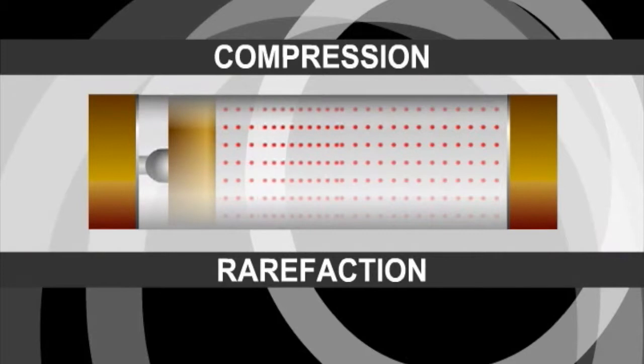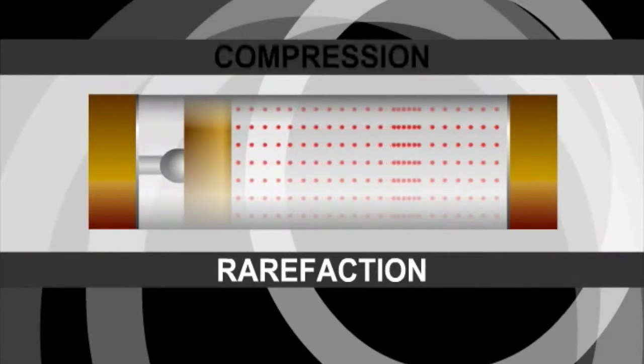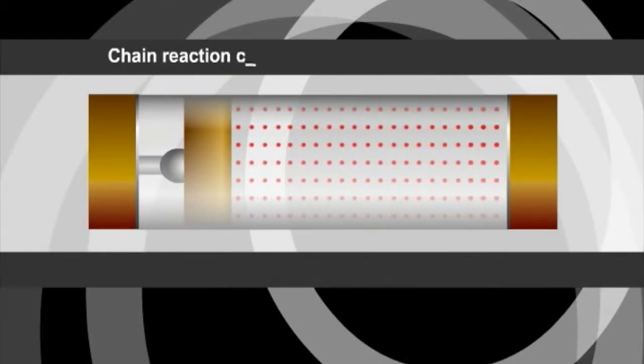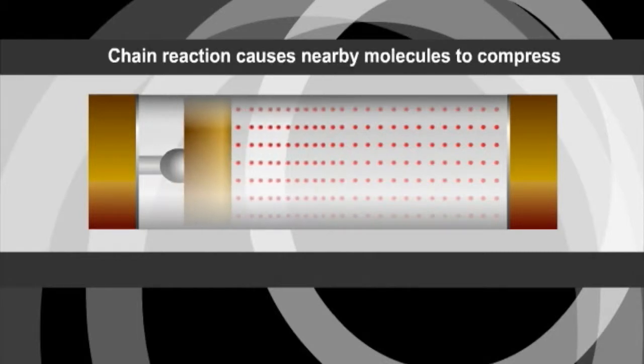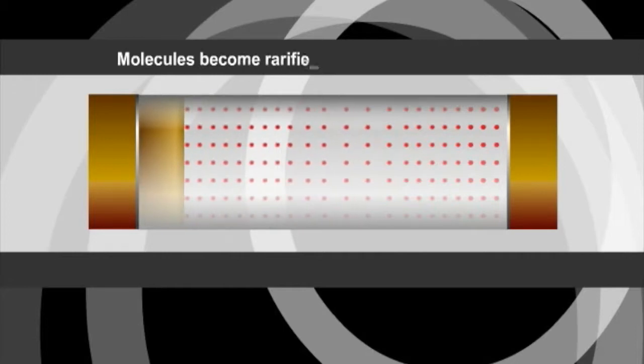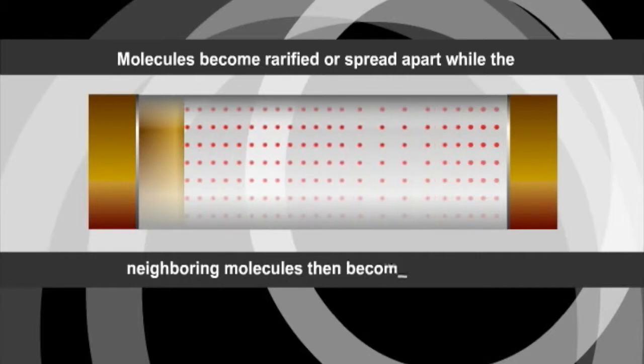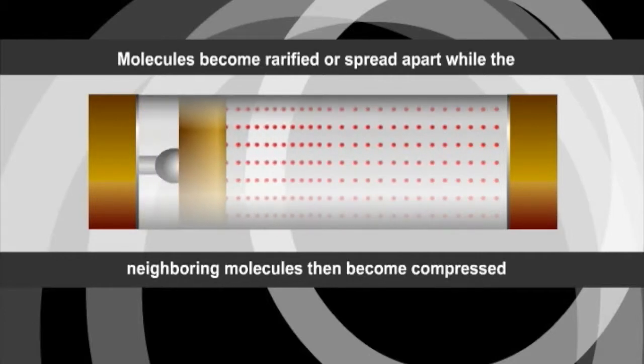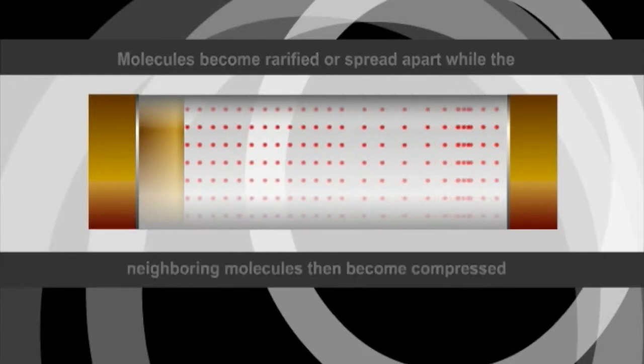The sound source, or the origin of the pressure wave or sound, begins a chain reaction which causes nearby molecules to compress. As the energy is further transmitted, the compressed molecules become rarefied or spread apart, while the neighboring molecules then become compressed. This process continues until the energy of the pressure wave is expended.